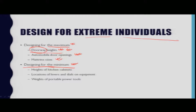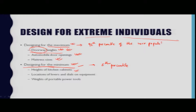Designing for the minimum is the opposite situation. Design features must accommodate the fifth percentile of the user population, whereas for designing for maximum you take about the ninety-fifth percentile of the user population.